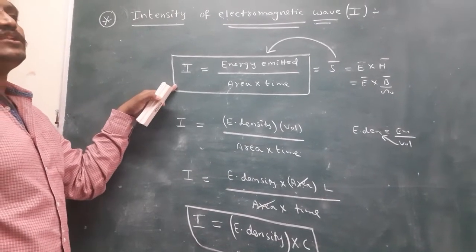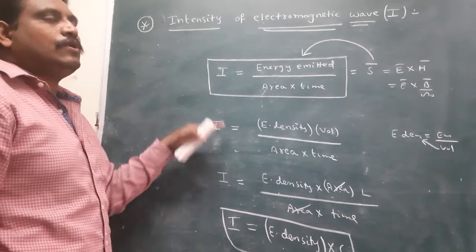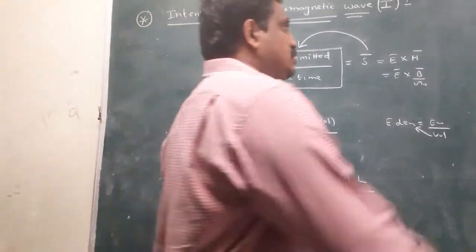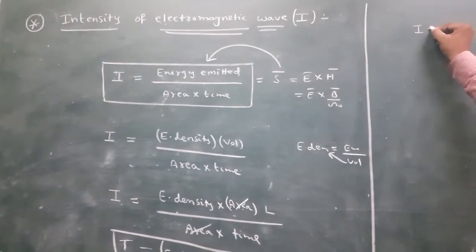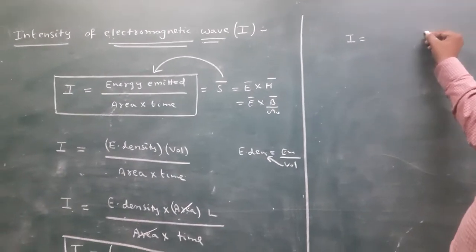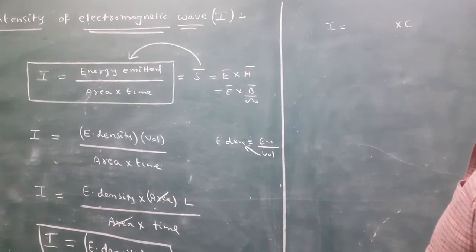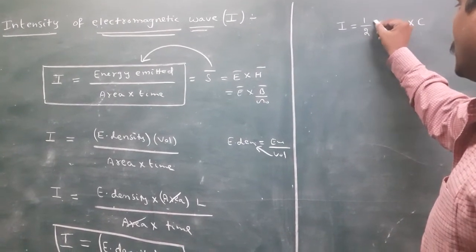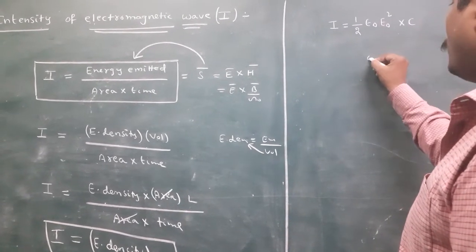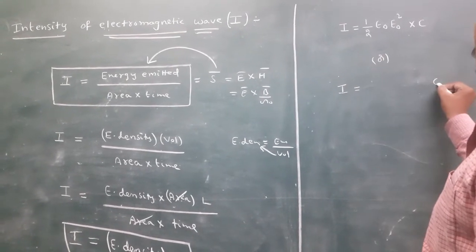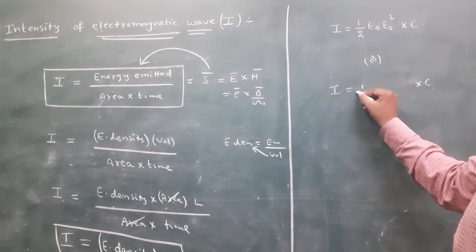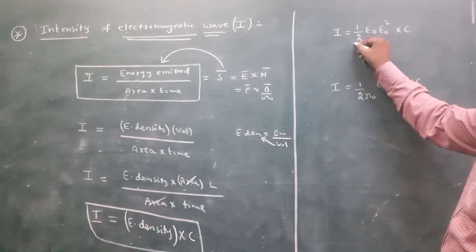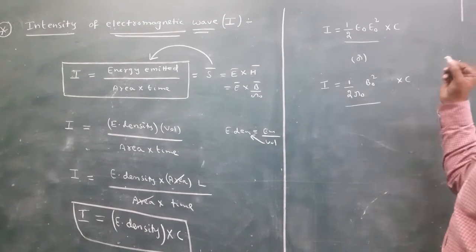The basic definition of intensity is energy flowing per unit area per unit time. The second formula is intensity equals average energy density into C. The energy density of an electromagnetic wave in terms of electric field is one-half into epsilon-naught into E-naught squared. In terms of the magnetic field, energy density is one-half into mu-naught into B-naught squared.